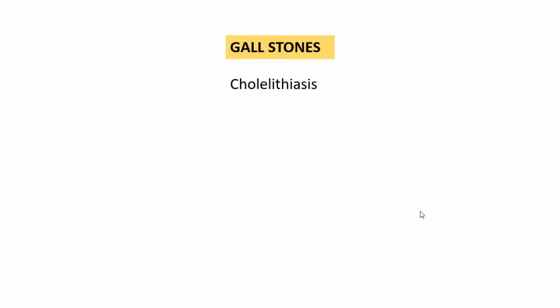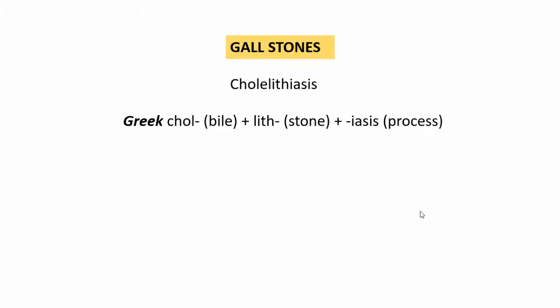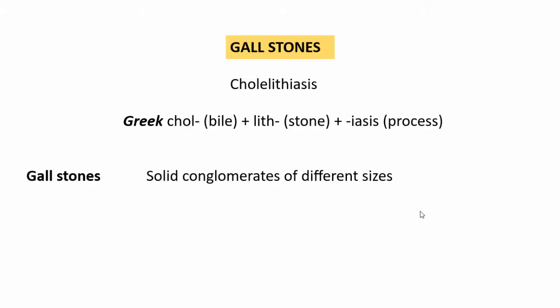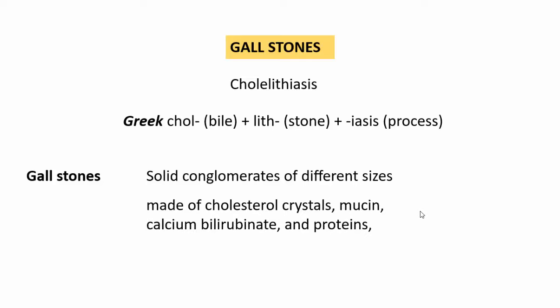Coming to gallstones proper: gallstones are also referred to as cholelithiasis. Cholelithiasis is a Greek terminology where 'chole' means bile, 'lith' means stone, and 'iasis' means process — it is a process where stones are formed from the components of bile. Gallstones are solid conglomerates of different sizes made up of cholesterol crystals, mucin, calcium bilirubinate, and proteins forming inside the gallbladder.